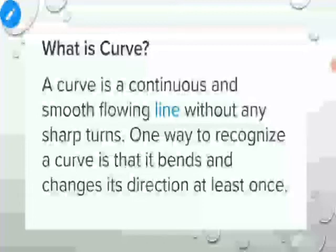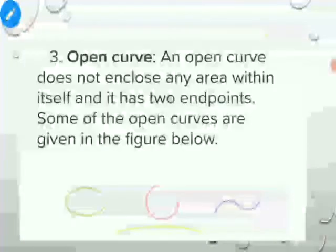What is a curve? A curve is a continuous and smooth flowing line without any sharp turns. One way to recognize a curve is that it bends and changes its direction at least once. When you take a sharp pencil and draw anything in one stroke without removing the pencil, a curve is formed. A curve can be a straight line or a curvilinear line.